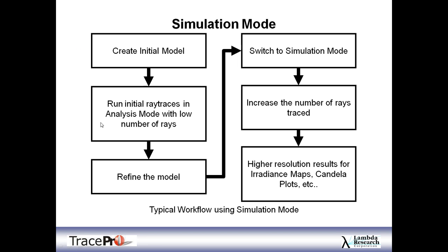A typical simulation mode workflow: create the initial model, apply all properties, build the geometry, set up sources, then run an initial ray trace in analysis mode with a low number of rays — which could be 1,000 or a million depending on what you need. Refine the model based on those initial results, then switch to simulation mode, increase the number of rays by a factor of 10 or 100, and trace a very large number of rays. You can then look at higher-resolution irradiance maps, candela plots, and 3D irradiance maps — seeing much better uniformity results. You may also be able to turn off smoothing and increase the number of pixels displayed.